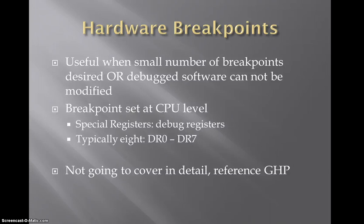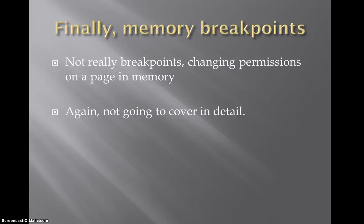The next type are hard breakpoints, or hardware breakpoints. These are useful when a small number of breakpoints are desired or the debug software cannot be modified. These are breakpoints set specifically at the CPU level. Along with the eight general purpose registers, there are special debug registers DR0 through DR7, and certain registers are used for certain tasks. I'm not going to cover these in much detail since we won't look at code to set hard breakpoints, but the book does a fairly good job of covering those. As for memory breakpoints, the author explains these as a changing of permissions on a page in memory — they're not really breakpoints in the traditional sense. The book hits it at a high level and I'm sure there are great resources on the internet for more detail.